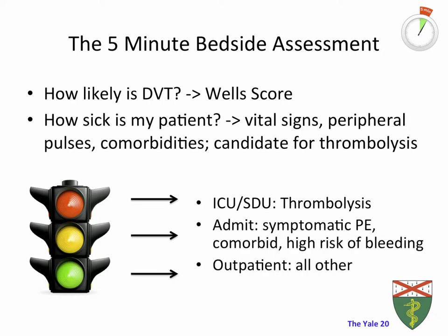Most other patients can actually be managed as outpatients. However, there are some considerations when you want to admit a patient to the hospital: if that patient has a high risk of bleeding when you start anticoagulation, if that patient has severe comorbidities that would require admission to the hospital, or if that DVT is complicated by a symptomatic PE. These patients are definitely candidates you want to admit to the hospital for close observation.